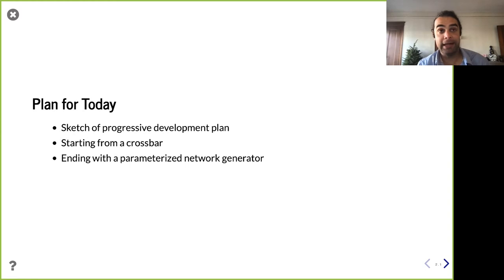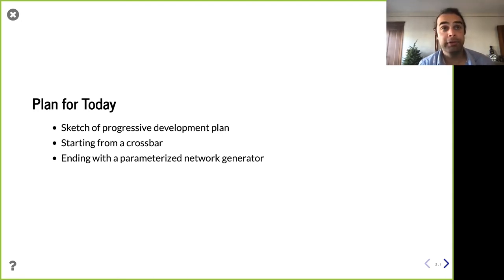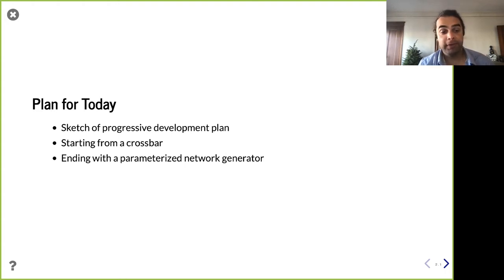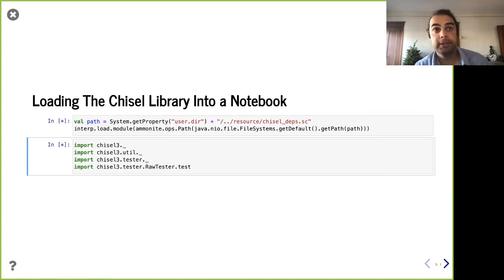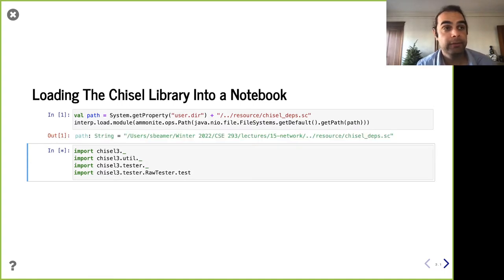We're going to have a progressive development plan. We'll start from a crossbar, which we covered almost two weeks ago when we talked about arbitration, and then we're going to end up with our incremental design process and constant revision culminating in a parameterized number generator. Let's go ahead and load up our notebook.